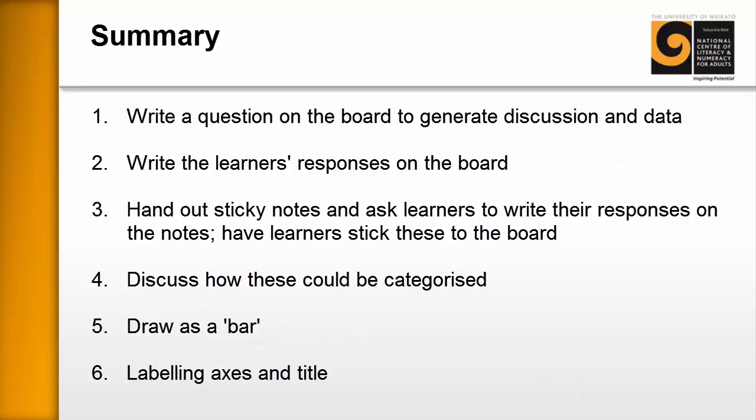In summary: write a question on the board to generate discussion and data; write the learners' responses on the board; get them to predict what other people are saying; hand out sticky notes and have learners write their responses and stick them to the whiteboard; have learners discuss how the data can be categorized; draw it as a bar by removing the sticky notes and drawing a single bar with axes; and finally, label the axes and add a title. It's also a good idea to take a photo of the graph and repeat the activity in a few weeks to compare the data.